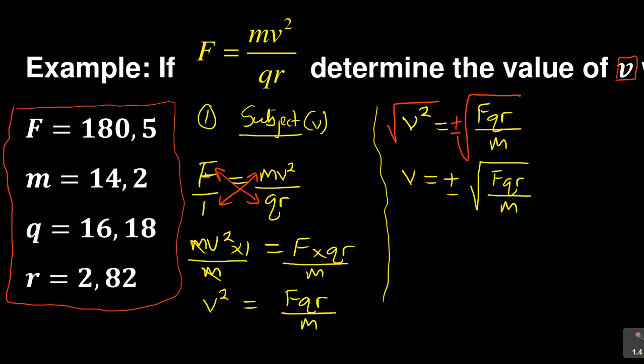In stage number two, you substitute. You go back to these values. You are given these values. Remember, avoid putting these values into the beginning here in stage number one. Don't say in my F you start putting the 180.5 already - it will actually confuse you. You don't do that. You're going to do it in the second stage when you already have your v separated.